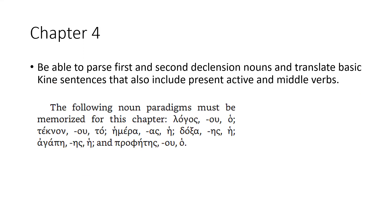The skills you need are to be able to parse first and second declension nouns and translate basic Koine sentences that also include present active and middle verbs. The following noun paradigms must be memorized for this chapter: logos (-ou, ho), teknon (-ou, to), hemera (-as, ei), doxa (-es, ei), agape (-es, ei), and prophetes (-ou, ho). I recommend a parsing app or free parsing app website. You can also learn them by rote, by writing them down, or by using a parsing app.